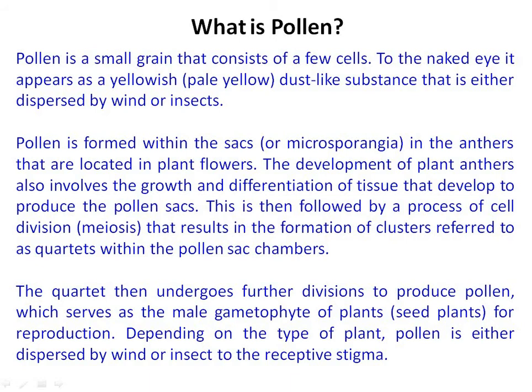Pollen grain is formed within the sac in the anther located in plants, and is also known as microsporogenesis. The development of the anther involves the growth and differentiation of tissue that develops to produce the pollen sac. This is followed by a process of cell division known as meiosis, resulting in the formation of clusters referred to as tetrads within the pollen sac chamber.